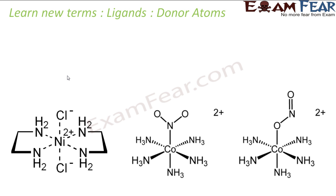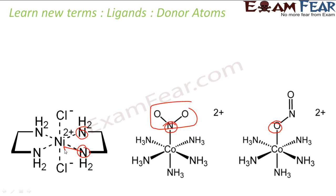In ligands, we also have the concept of donor atoms — the atom of the ligand that is directly attached to the central metal. For example, in a ligand that has both nitrogen and oxygen, whichever is directly bonded to the central metal is the donor atom. If nitrogen is donating to cobalt, nitrogen is the donor atom; if oxygen is donating, oxygen is the donor atom. Cobalt and nickel are the central atoms in their respective complexes.